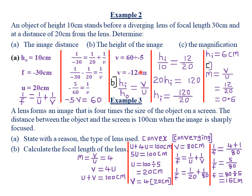For part b, we find the height of the image using magnification. Magnification equals hi/ho, which also equals v/u. So: hi/10 = 12/20. We use 12 (not negative 12) because the negative only indicates direction, not magnitude. Cross-multiplying: 20 × hi = 10 × 12 = 120. Dividing both sides by 20 gives hi = 6 centimeters. Therefore the height of the image is 6 centimeters.